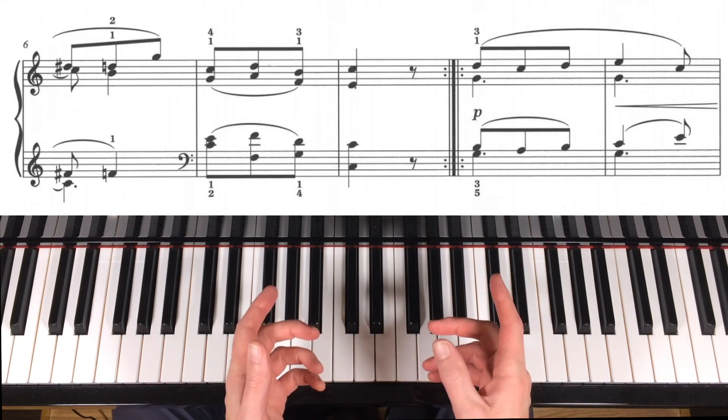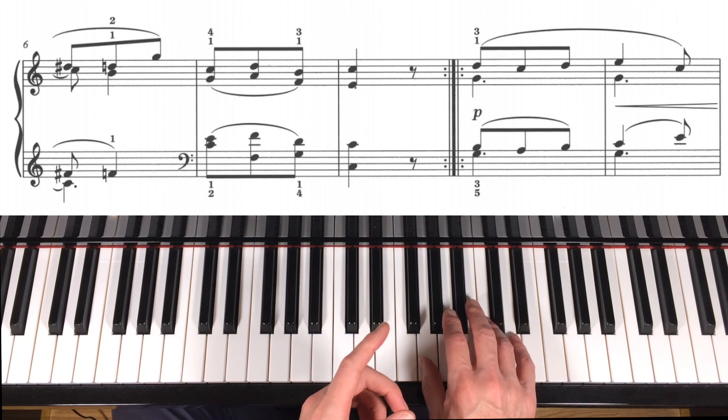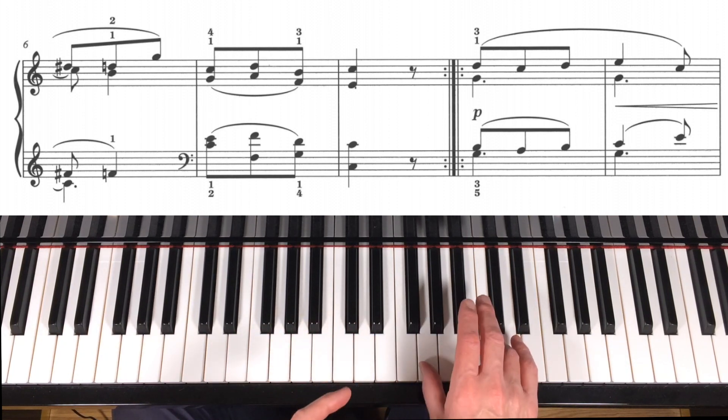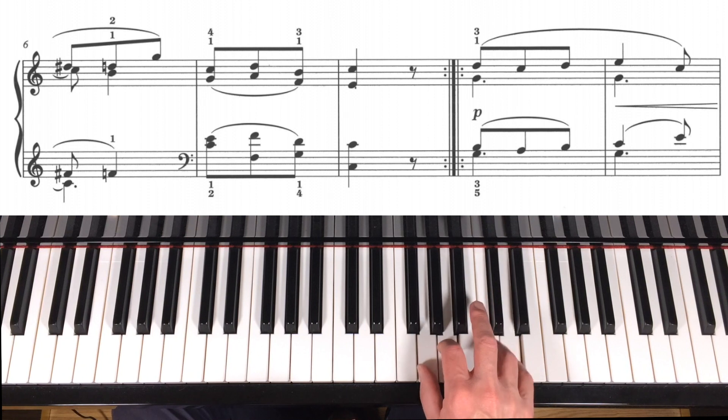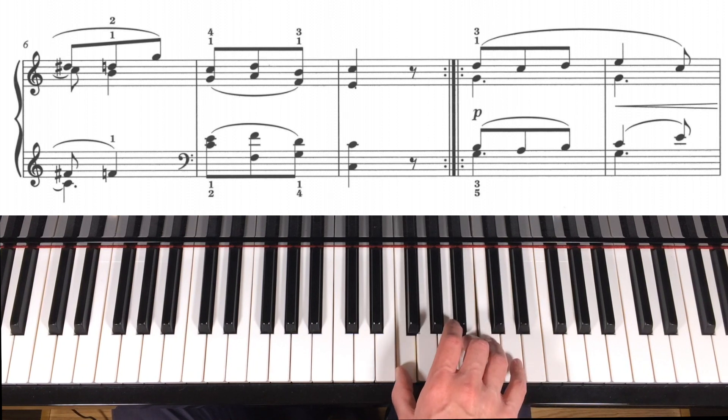Let's now have a look at bars 7 and 8. It's a similar story although slightly less complex I think, because the right hand can play completely legato except for that little thumb move there.